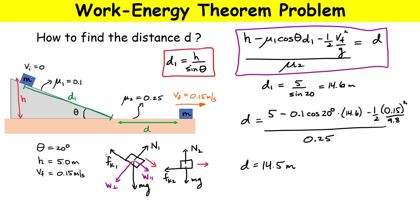It's interesting that the sliding distance on the flat section (14.5 m) came out very similar to the length of the ramp — that just depends on the chosen values for friction coefficients and angle. This is a good work-energy theorem problem. Make sure you understand the differences between the work done on the ramp and during the flat section. See you next time.